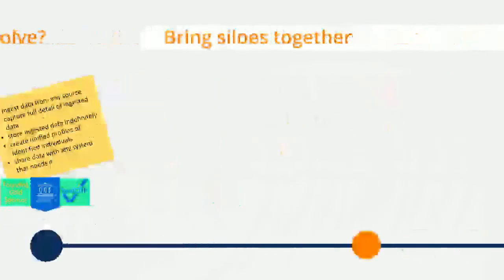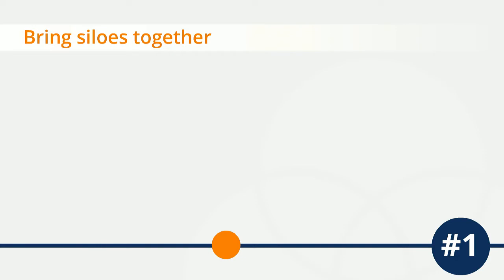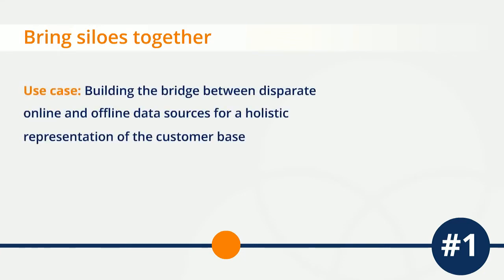Let's start with bringing together different data silos. We talked about the customer journey and the number of points throughout where data is provided. As data-driven marketers, we aim to capture data for as many of these avenues as possible, whether through online or offline interactions. Frequently, though, this data ends up siloed by channels, by department, or even written down on a piece of paper in our brick and mortar locations. What we end up with is a disjointed view of the customer that doesn't take into account all of their interactions with us as a brand. It's really important to bring all of these data silos together into a single consistent view to create that consistent customer experience that we're striving for.